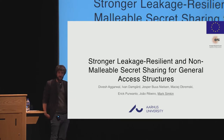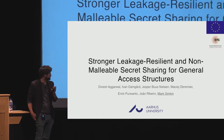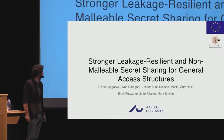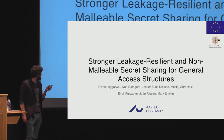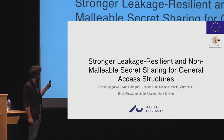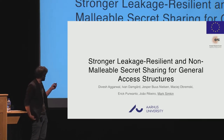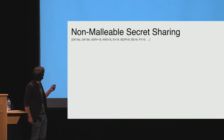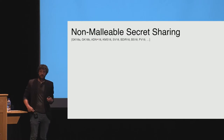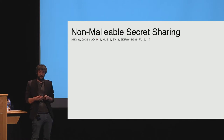I'm going to present our paper, which deals with a very similar topic. This is 'Stronger Leakage Resilient and Non-Malleable Secret Sharing for General Access Structures,' a joint work with Divesh Aggarwal, Ivan Damgård, Jesper Buus Nielsen, Maciej Obremski, Eric Porcello, Zhao Ribeiro, and me. Since we already heard about non-malleable and leakage-resilient secret sharing in the previous talk, I'll focus on things not yet covered.